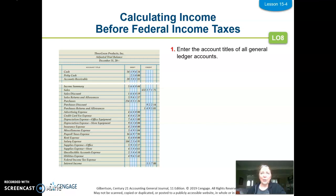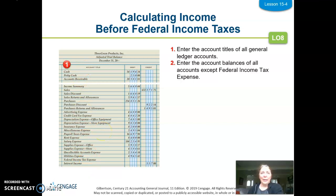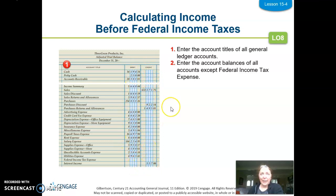The first thing I'm going to do is enter all the account titles — they're kind of cut off because it couldn't all fit, but you have this in your paper. Then we're going to enter the account balances of all accounts except for tax expense, because we haven't made that adjustment yet. Every account balance comes from the general ledger and has been updated from the adjustments. That is the second step.